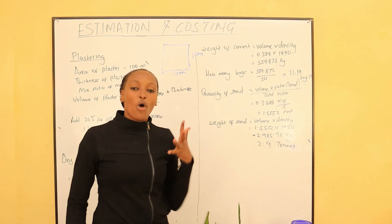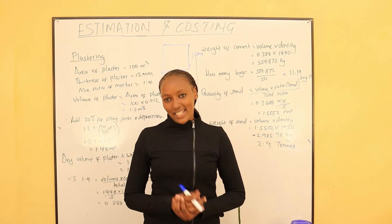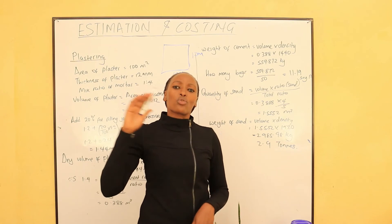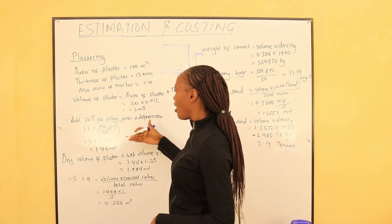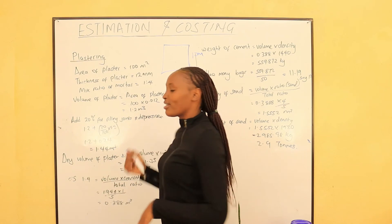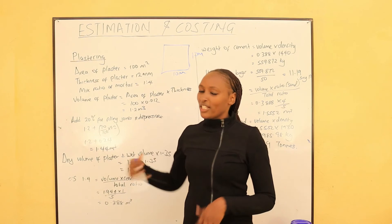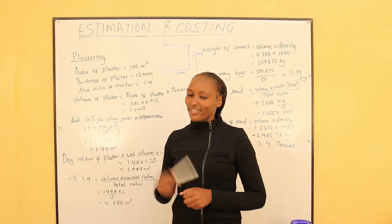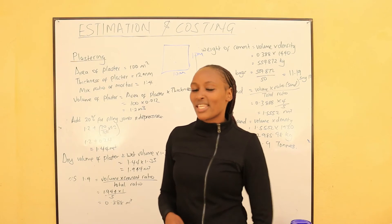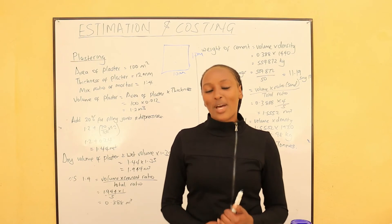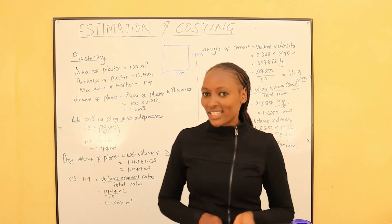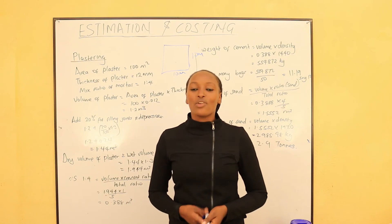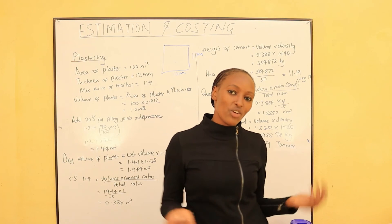So that is the quantity of cement and sand when you are doing plastering in a building. If you want to know the quantity for your own building, calculate the total area of walls, then multiply by the thickness of the plaster, then add 20% for filling joints and depressions to get the wet volume. Multiply by 1.35 to get the dry volume. For cement, multiply the dry volume by 1/5, then multiply by the density of cement (1440) to get mass, then divide by 50 kg per bag. For sand, multiply the dry volume by 4/5, multiply by the density of sand (1920), and divide by 1000 to get tons.